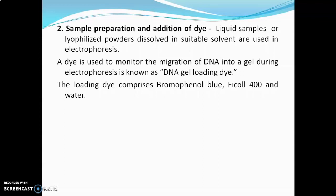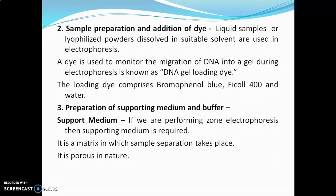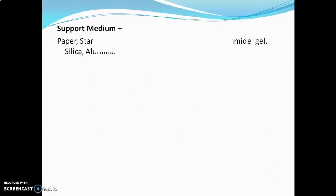The next step is preparation of support medium and buffer. If we are performing zone electrophoresis, a support medium is required — it is a porous matrix in which sample separation takes place, and may show adsorption or molecular sieving of sample. The support media used may be starch, paper, cellulose acetate membrane, agarose, polyacrylamide gel, or silica or alumina.